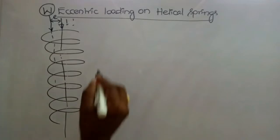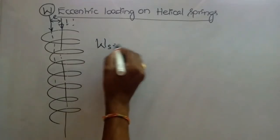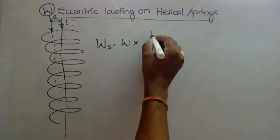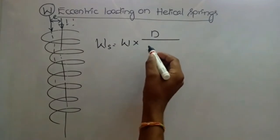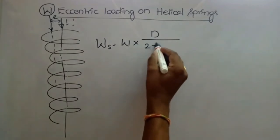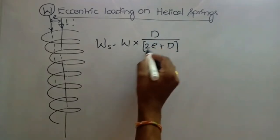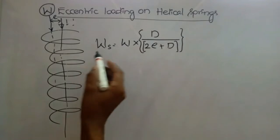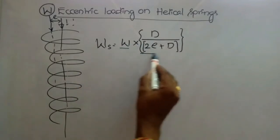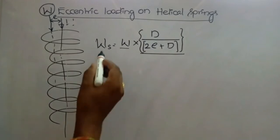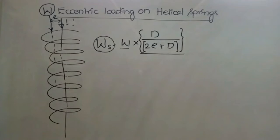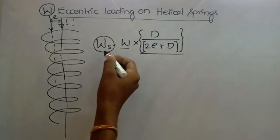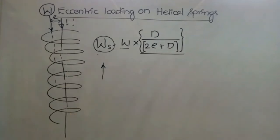Under the action of eccentric load, the safe load can be calculated as: W_s = W × (d / (2e + d)), where d is the diameter of the coil and e is the eccentricity. This factor gives the safe axial load under eccentric loading conditions. You cannot apply more than this safe load; beyond it, there is a possibility of failure and the spring cannot perform its required function.